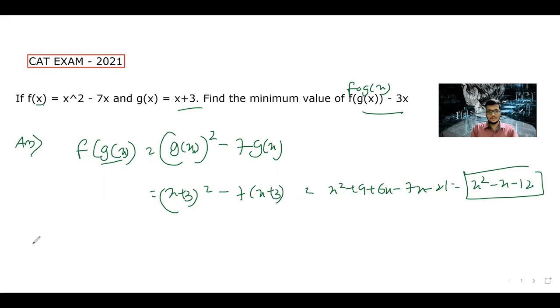Wait, you will not minimize this, you will minimize this minus 3x. So let it be h of x. f of g of x minus 3x, which is x squared minus 4x minus 21.